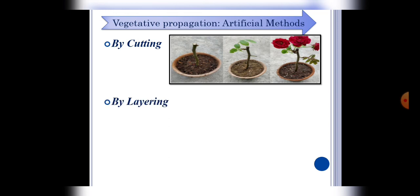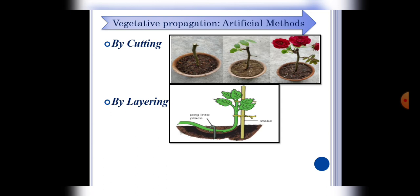Next process, by layering. In this method, a branch is bent down and covered with soil while still attached to the parent plant. Roots develop at the covered point and then the branch is separated to form a new plant.